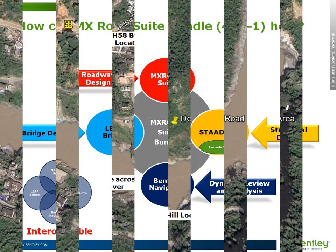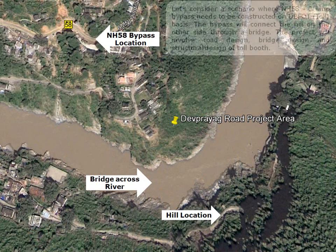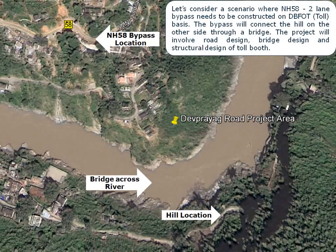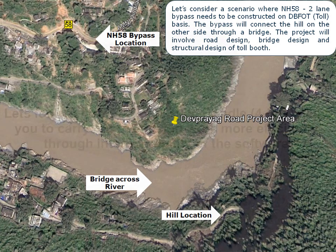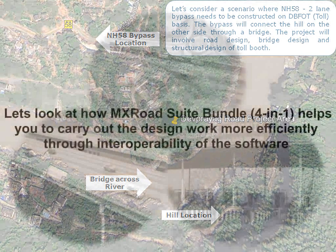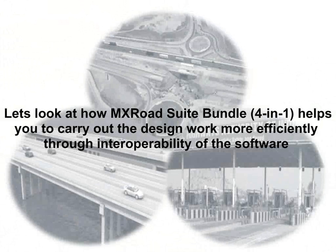Let's consider a scenario where NH58 two-lane bypass needs to be constructed on a DBFOT basis. The bypass will connect the hill on the other side through a bridge. The project will involve road design, bridge design, and this being a DBFOT project, it will involve the structural design of a toll booth. Let's look at how MX Road Suite Bundle 4-in-1 helps you carry out the design work more efficiently through interoperability of the software.